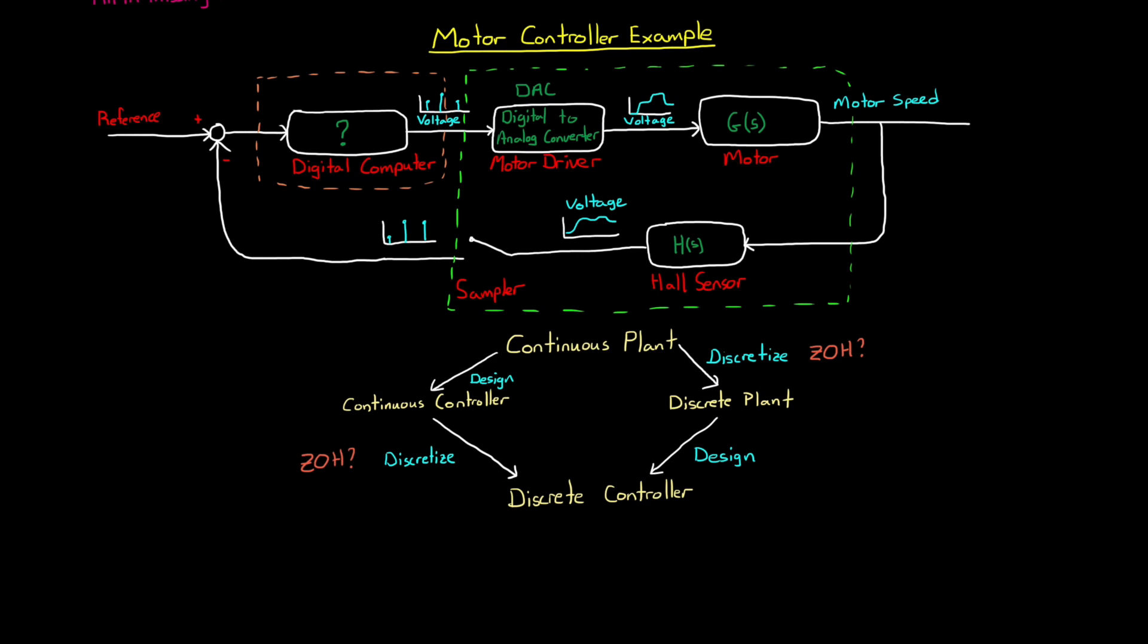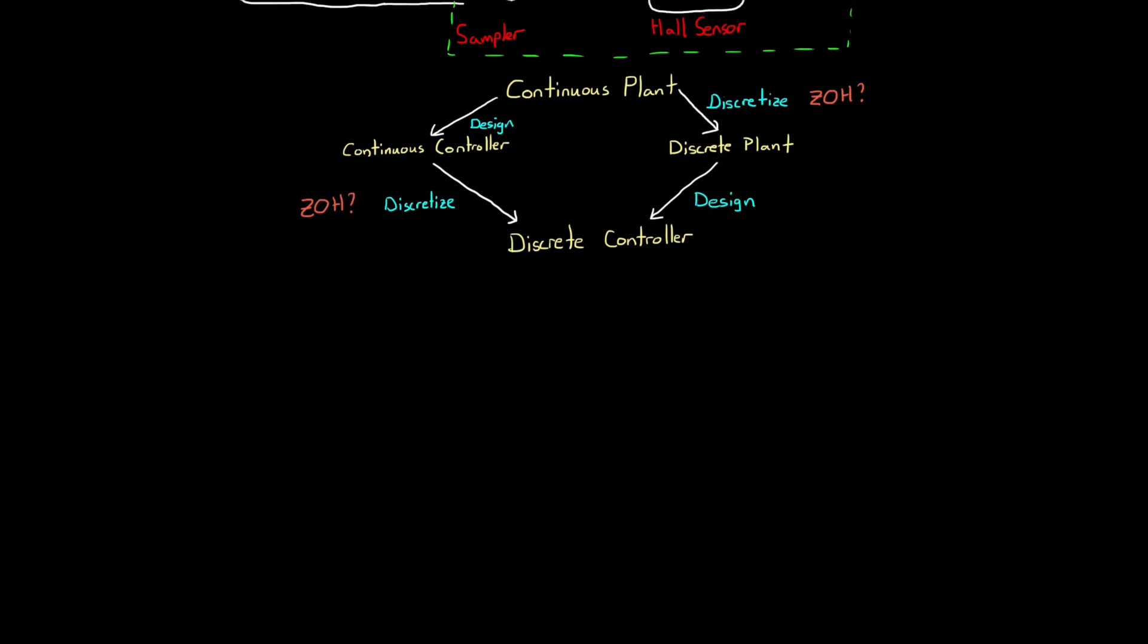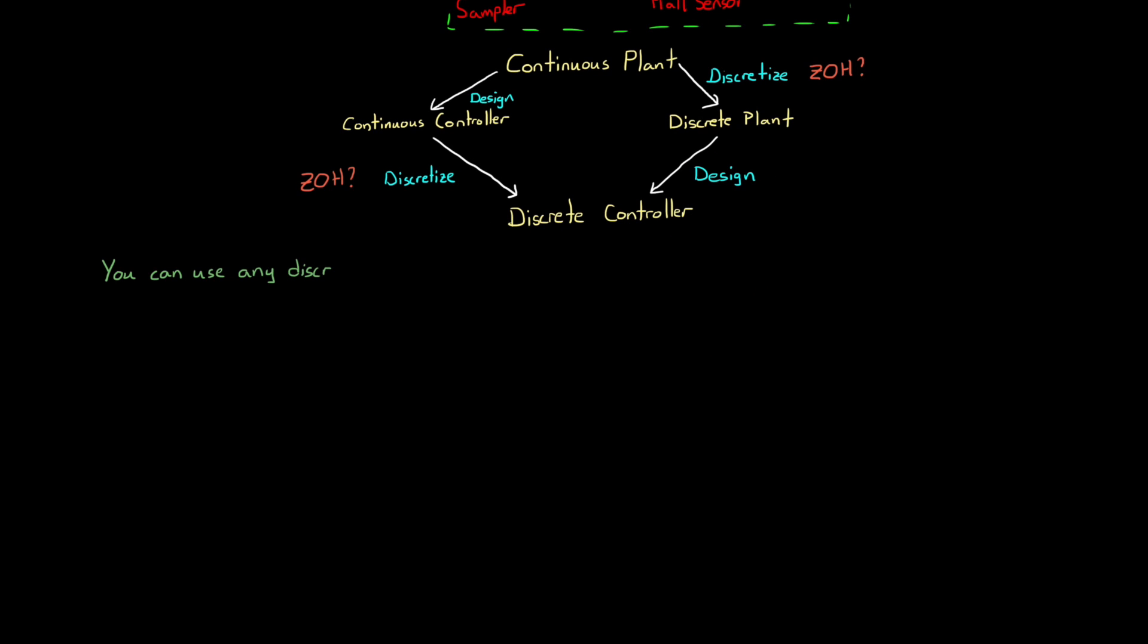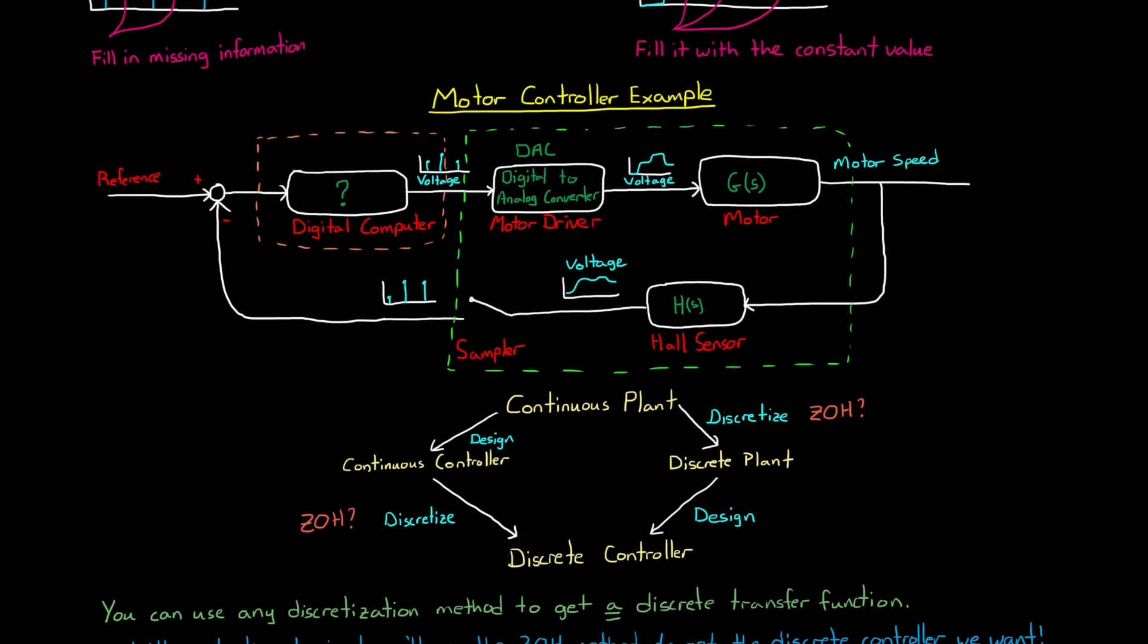I unfortunately said that you could use the zero-order hold method in both of these cases. That is, use it to discretize your controller or your plant. That statement is technically true. You can use any discretization method you want to get a discrete transfer function. However, it's misleading to imply that we'll use the zero-order hold method to get the discrete controller transfer function that we want. So why is that? Why don't we just take the zero-order hold method and run with it for every continuous system that needs to be discretized?